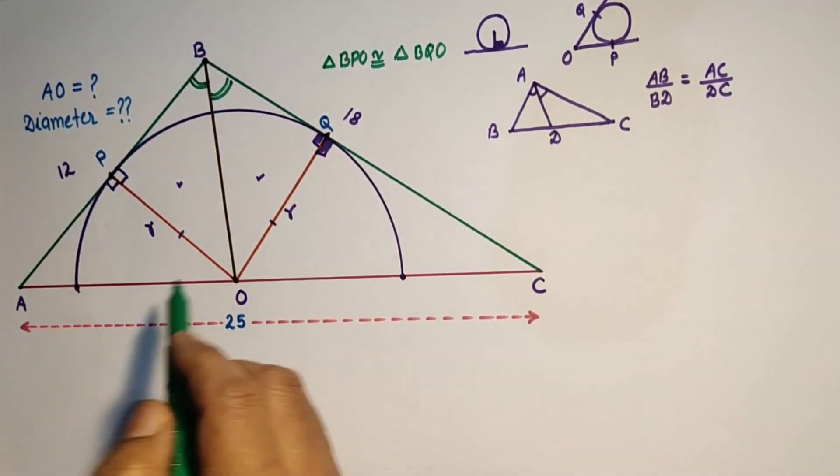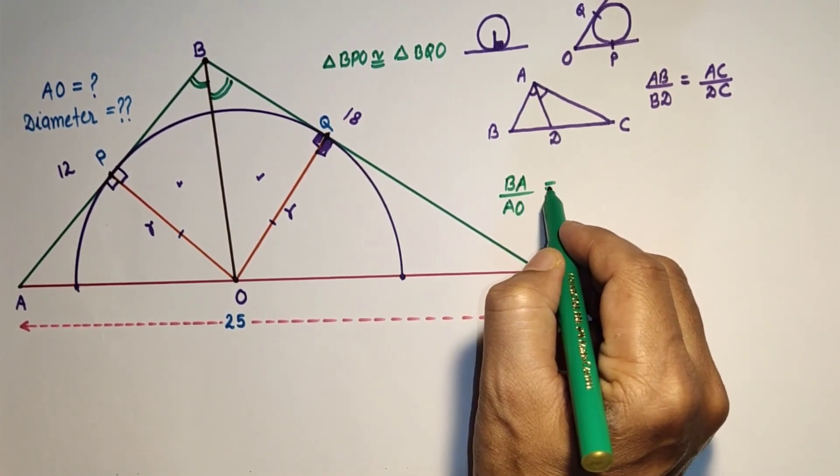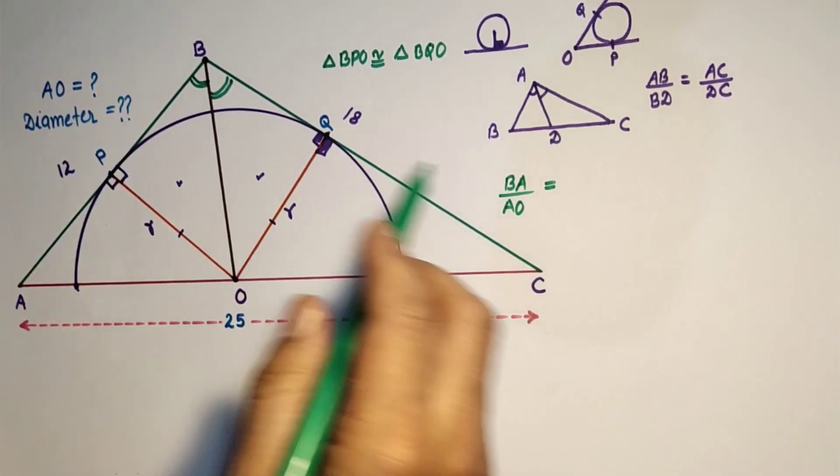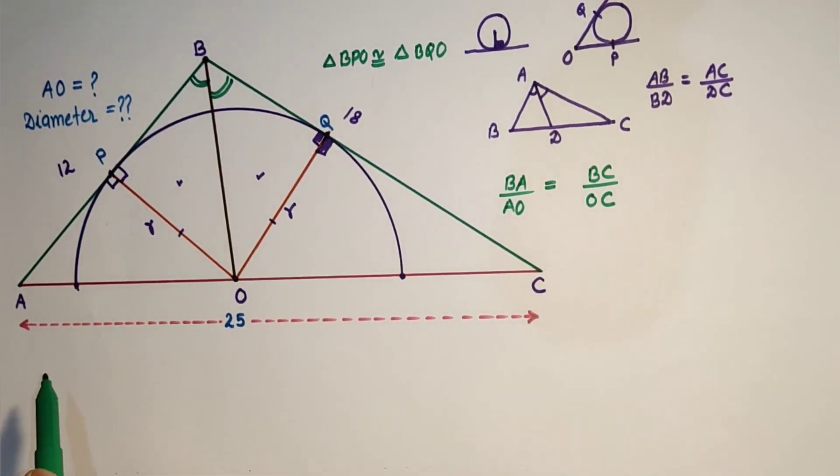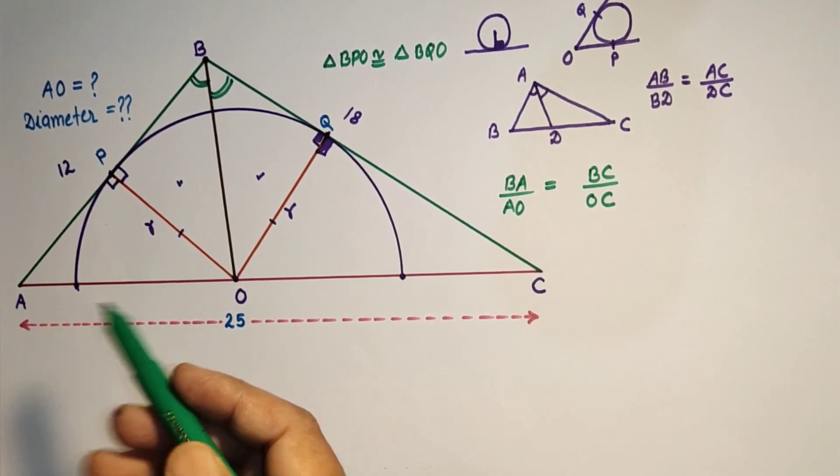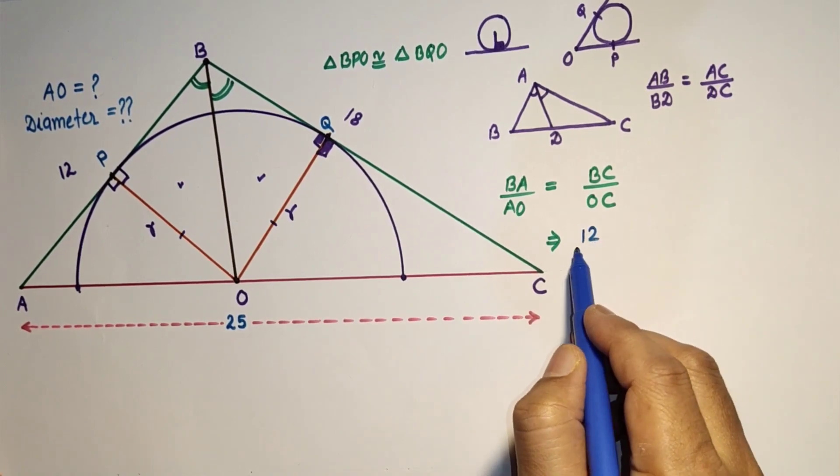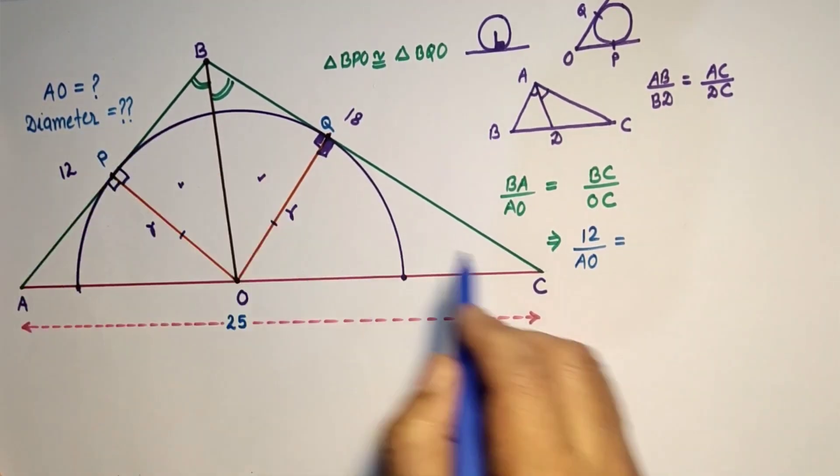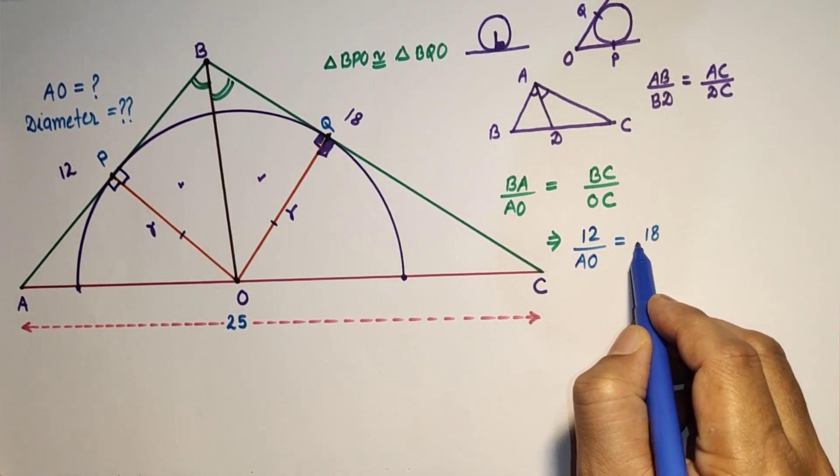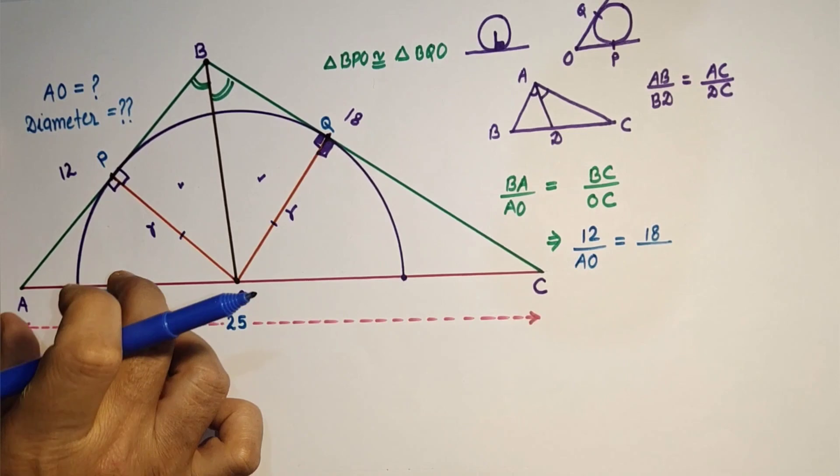We can say that BA upon AO is equal to BC upon OC. BA is 12 and AO, take AO as AO, and this OC as 25 minus AO. BA 12 over AO is equal to BC is 18 over this OC, only this OC is 25 minus AO.